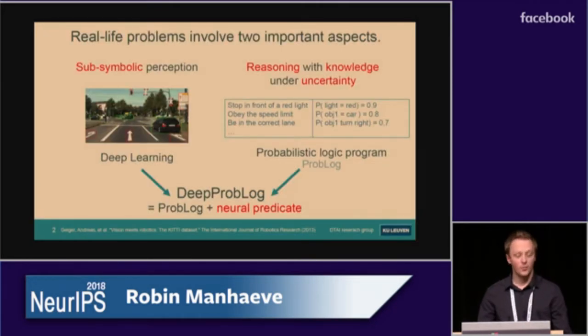Real-life problems often involve two important aspects. First, you have to do some sub-symbolic perception, such as object recognition. This can be solved using deep learning.